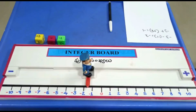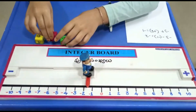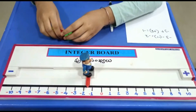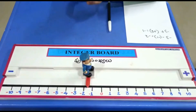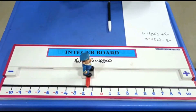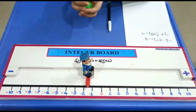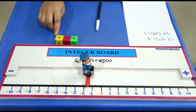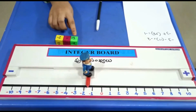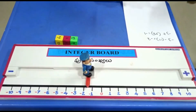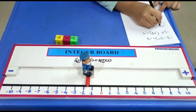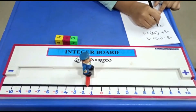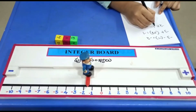Now let us play multiplication of integers. Now if I throw the dice, the question is minus 2 into plus 3.